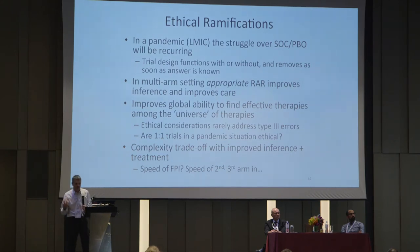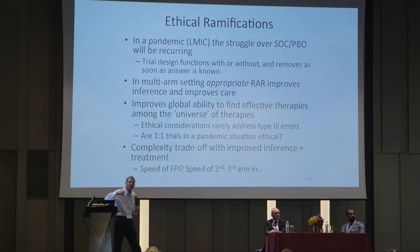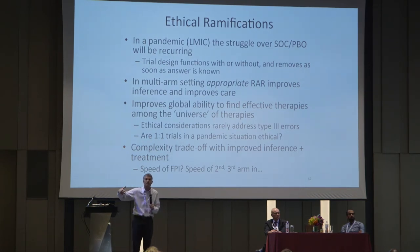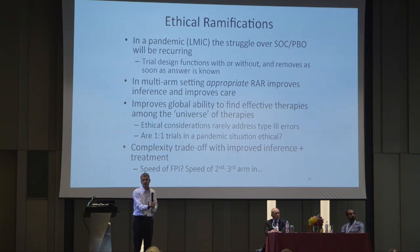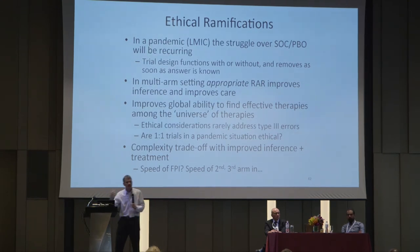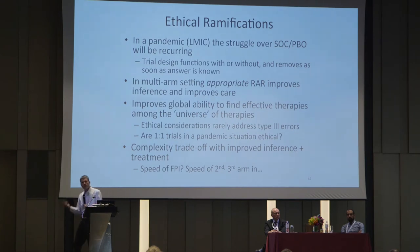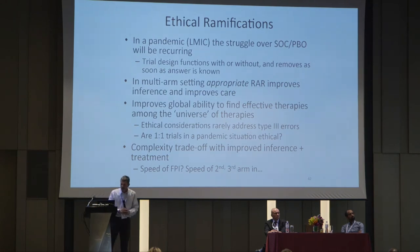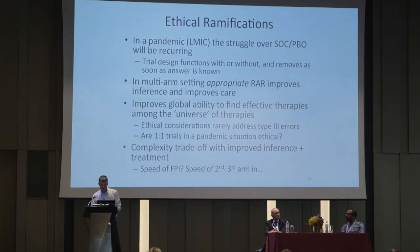If you have a master protocol running, as soon as drug seven becomes interesting, you can have first patient in within a week or two — you just have to approve it within the already-running trial. If I want to investigate drug seven in a separate trial, I need to file IRBs, create the protocol — we're talking months, if not years. In a pandemic disease setting, the speed of first patient in is a key ethical tradeoff, and it's quite nice with a master protocol.